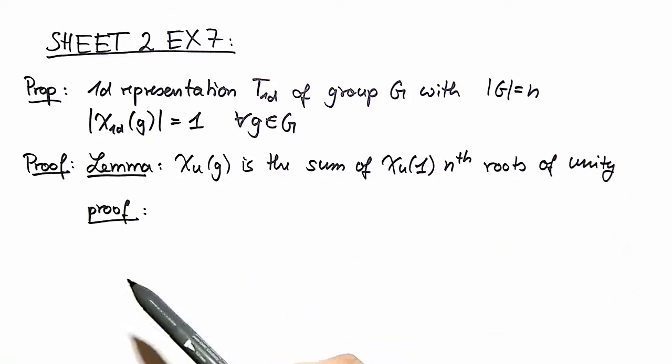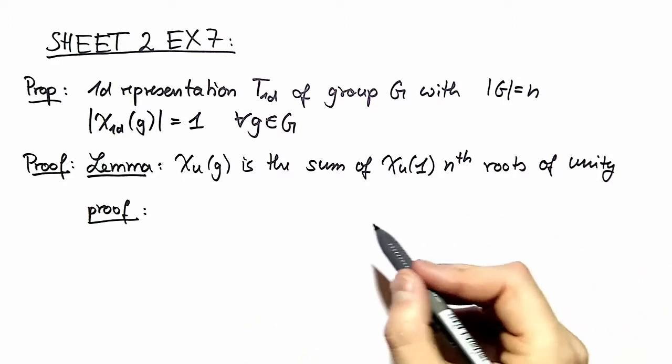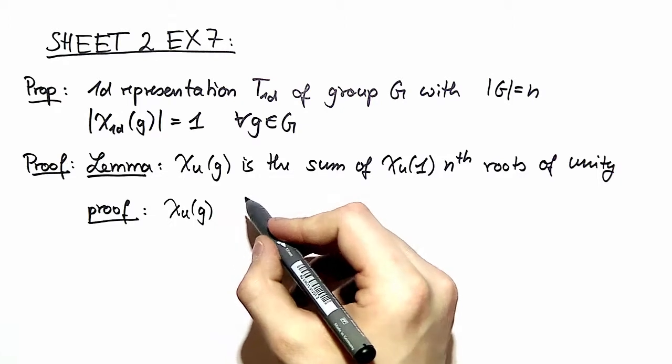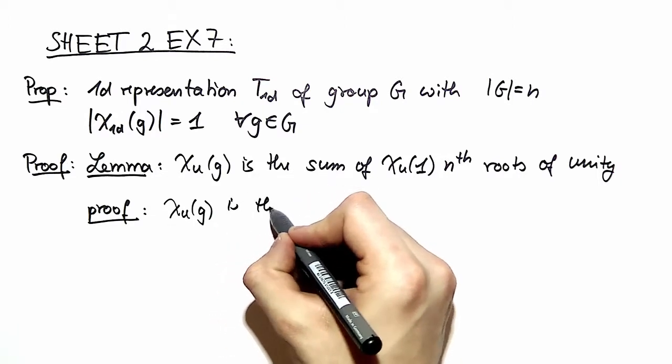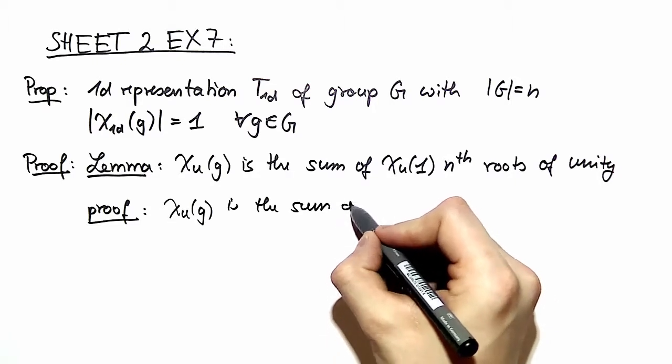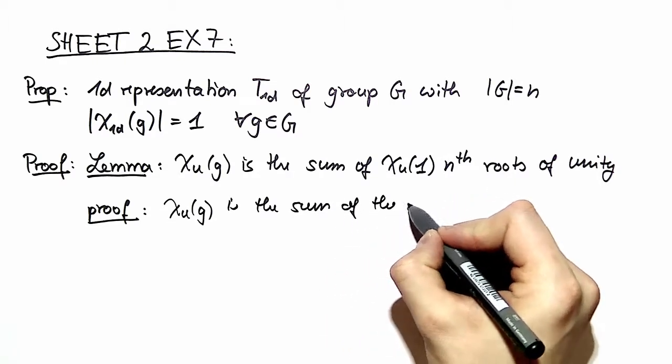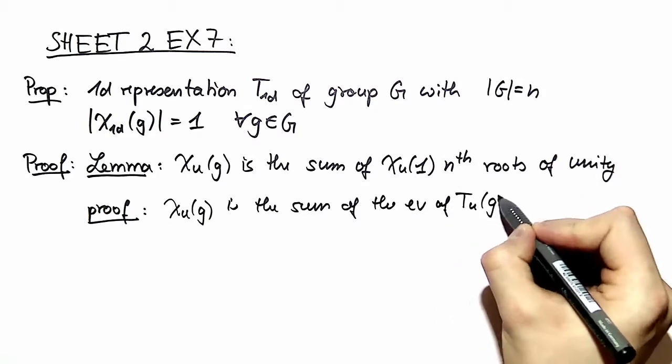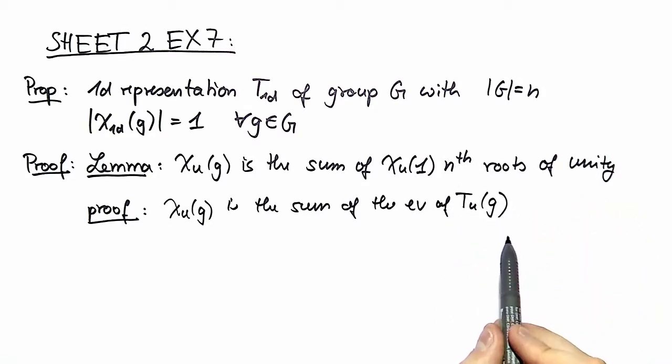For the proof we don't need much, we just need some definitions. First of all we notice that the character is the sum of the eigenvalues of the matrix representation of that element. You have that from the definition.